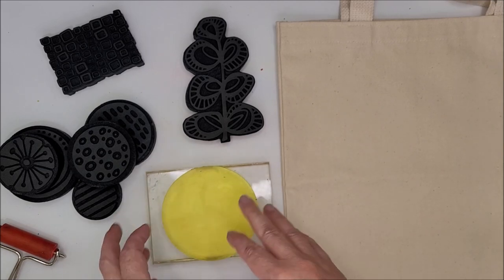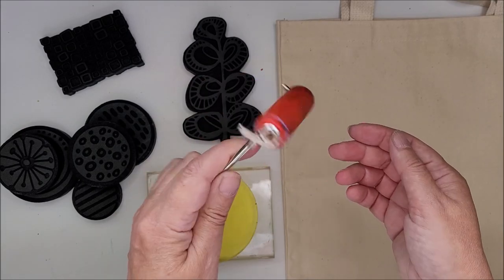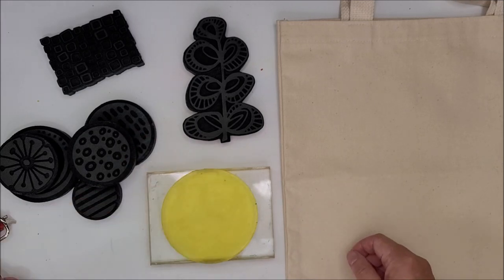I've got a brayer. This is just a small two-inch red rubber brayer. Just because I'm using a smaller plate, I've picked up the smaller size brayer that I own.